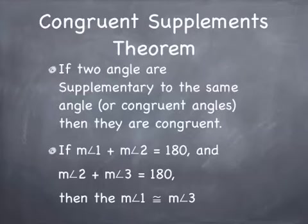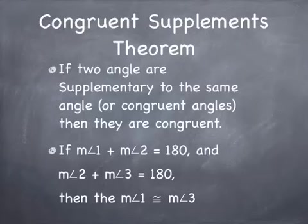The congruent supplements theorem says if two angles are supplementary to the same angle or congruent angles, then they are congruent. In notation: if the measure of angle 1 plus the measure of angle 2 equals 180, and the measure of angle 2 plus the measure of angle 3 equals 180, then the measure of angle 1 equals the measure of angle 3. Angles 1 and 3 both add to angle 2 to equal 180, so their measures must be the same.